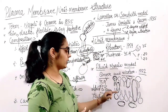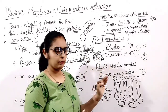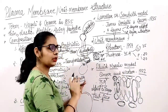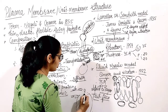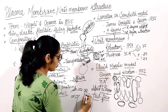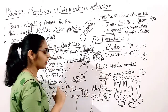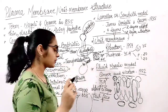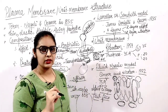So this is the fluid mosaic model that we have studied today. When we look at the plasma membrane under an electron microscope, we can see where the proteins are present and the receptors on the surface.